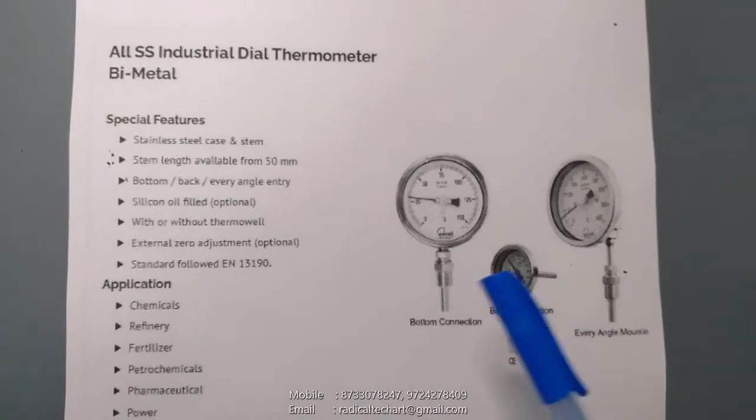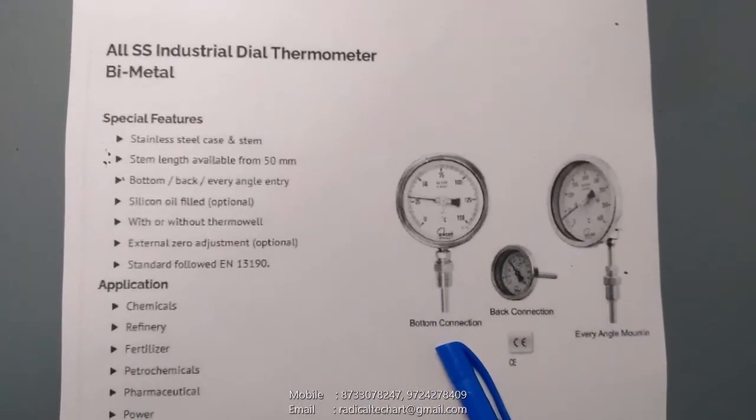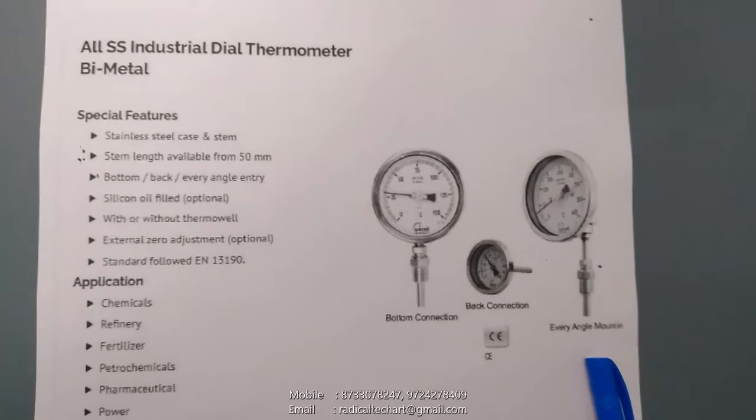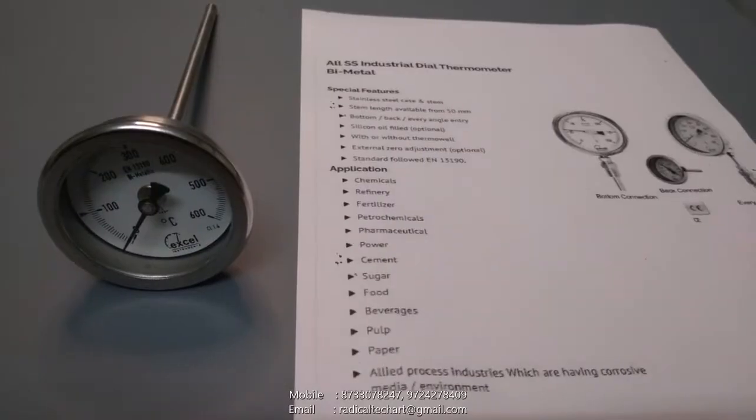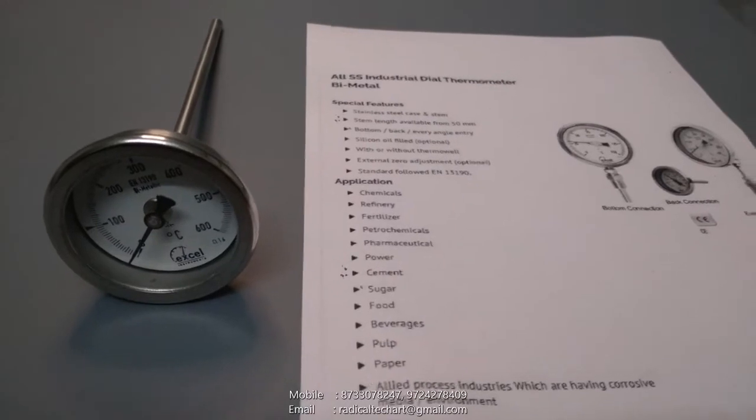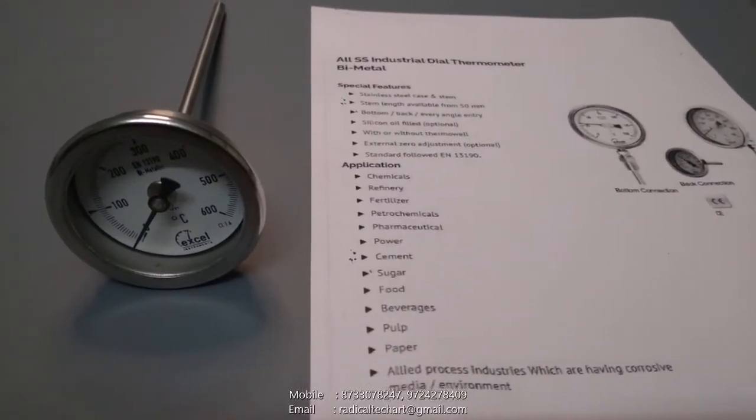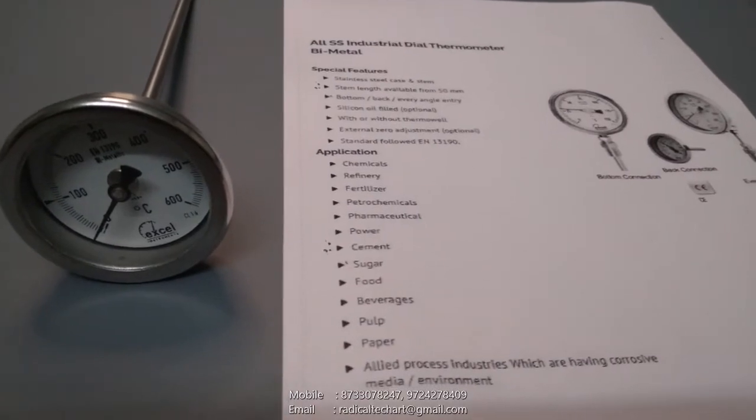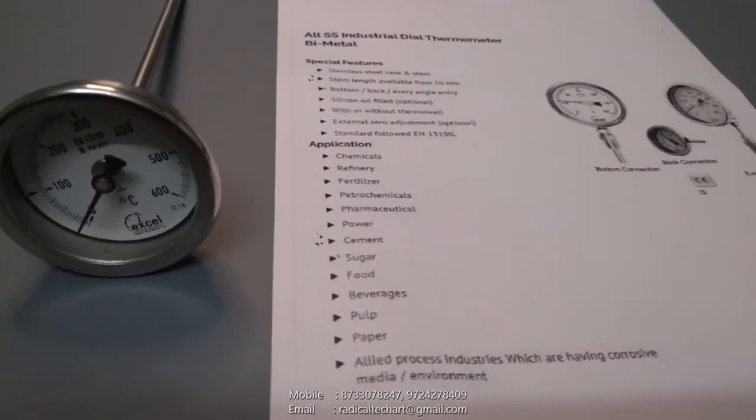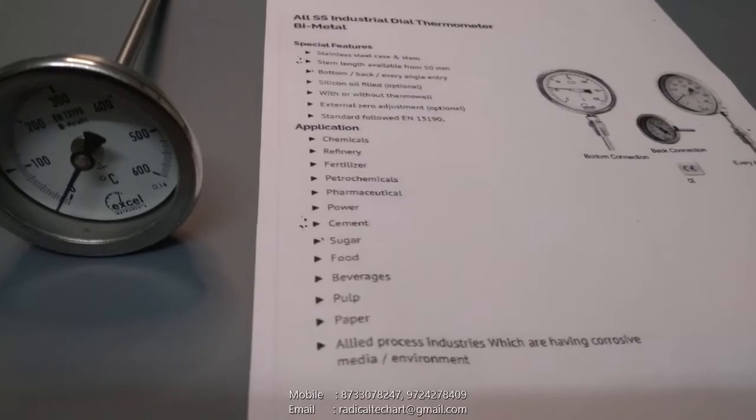You can see here three different models: bottom connection, back connection, or every angle module. Now let's talk about this bi-metallic temperature gauge models description. Its mounting type as we've seen with bottom connection, back connection, or every angle connection.